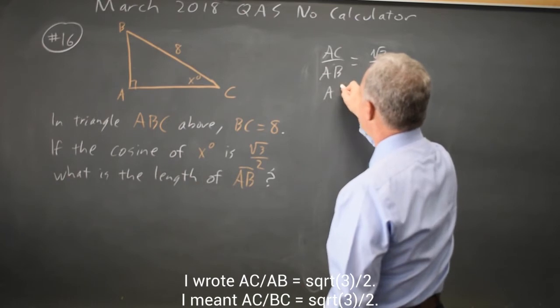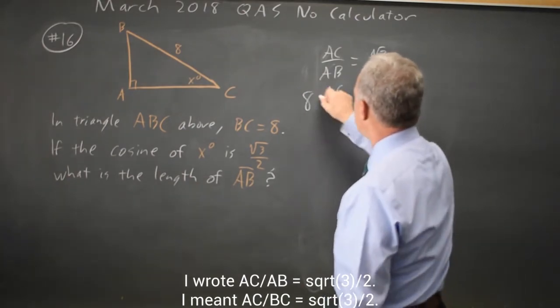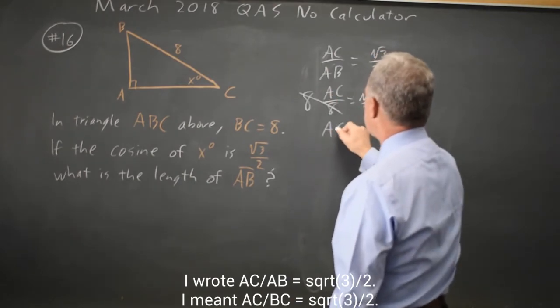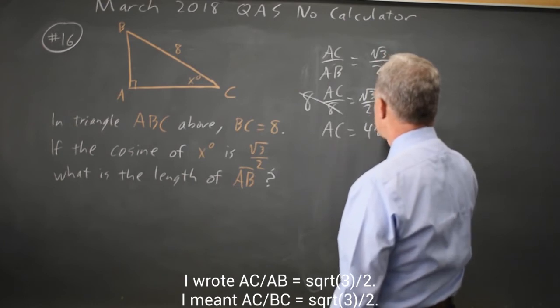So AC over 8 equals root 3 over 2. Multiply both sides by 8, so AC is 8 over 2 is 4 times root 3, which equals 4 root 3.